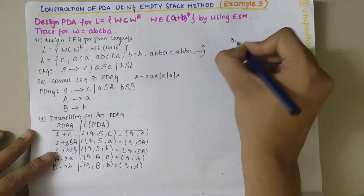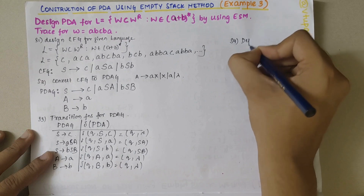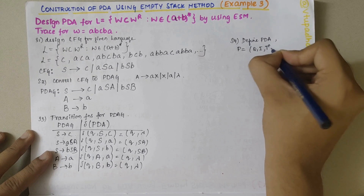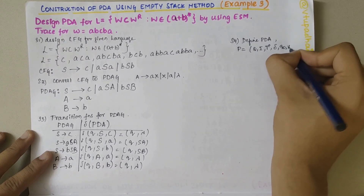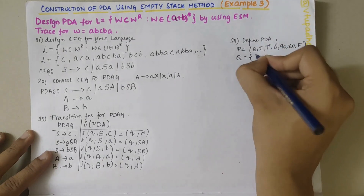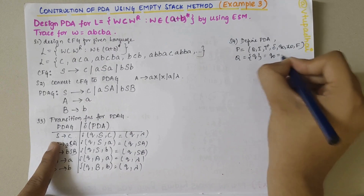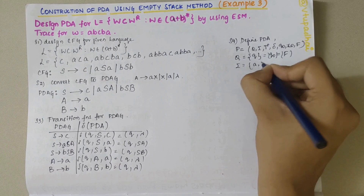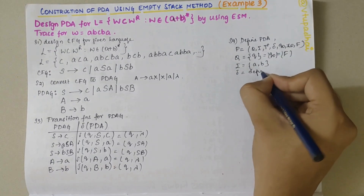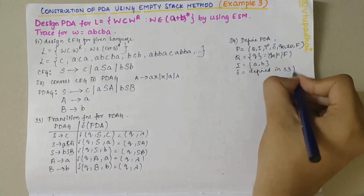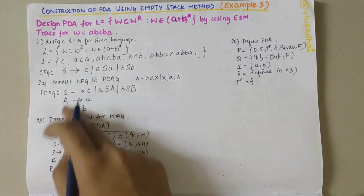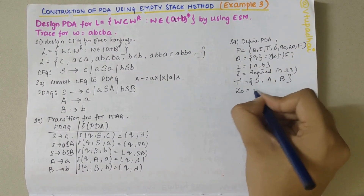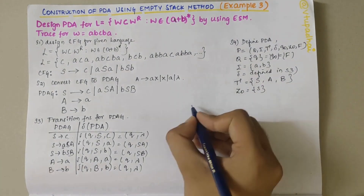The formal PDA is defined as P = (Q, Σ, Γ, δ, q₀, Z₀, F). Q has only one state. Σ (input alphabets) = {a, b}. The transition function δ is as defined in step 3. Γ (stack alphabets) = {S, A, B}. Z₀ (start stack symbol) = S. Since it's the empty stack method, F is not relevant. My next step is to trace the given string.